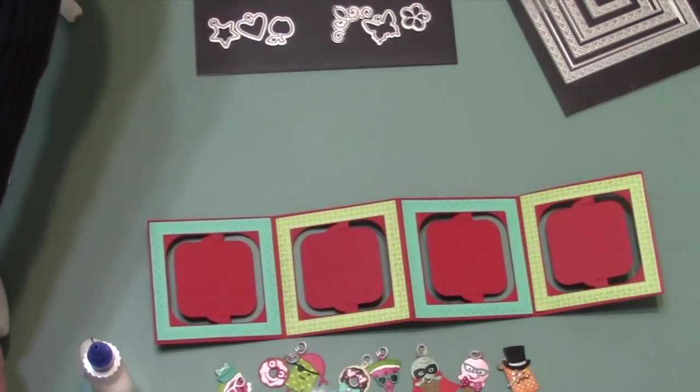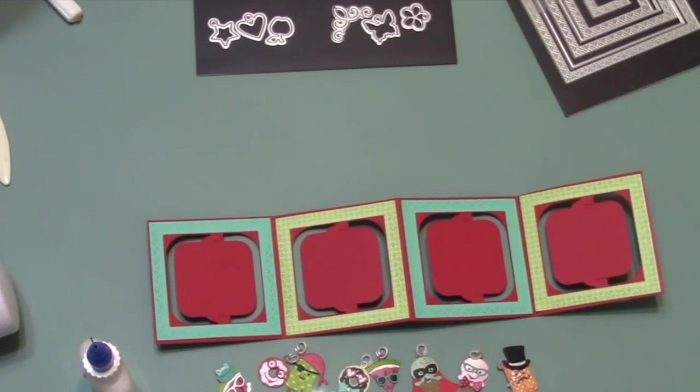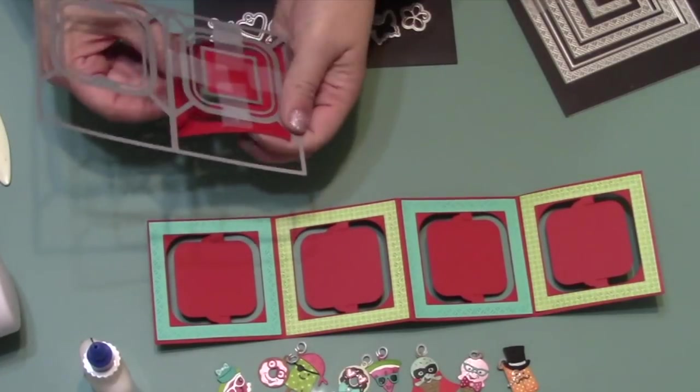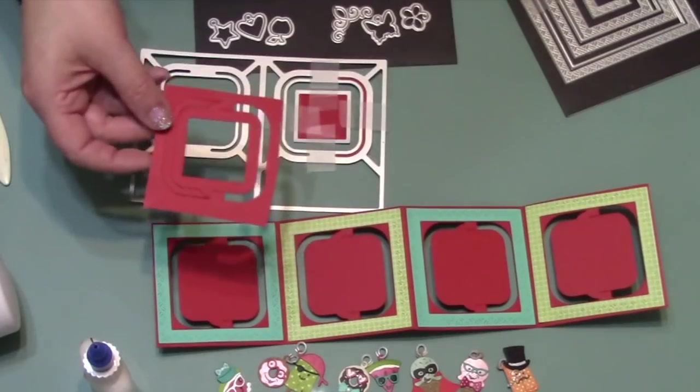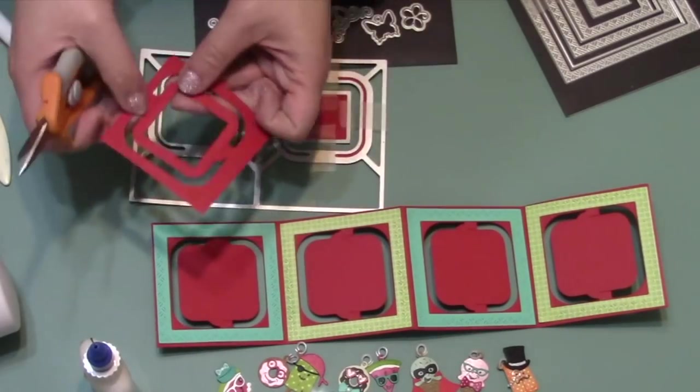And that small die will not move. Since I'm only looking for the rounded square frame itself, I only needed a piece of cardstock that was big enough to cover that area. Then right there on the pivot points, I can go in with my scissors and snip out that frame.